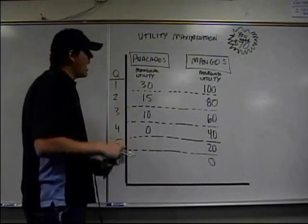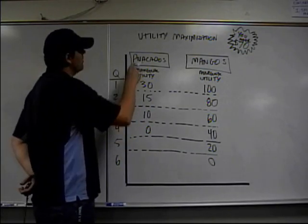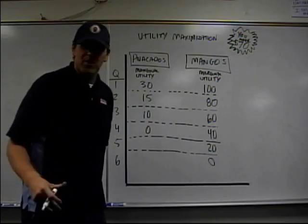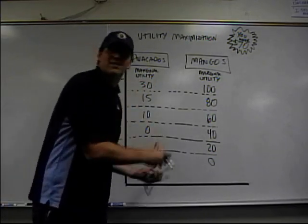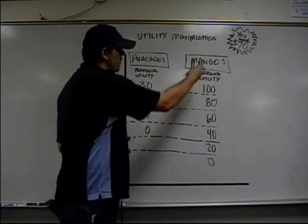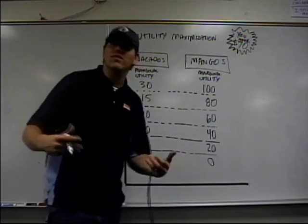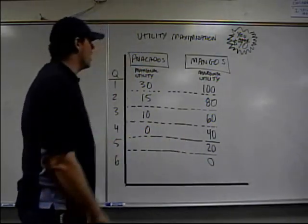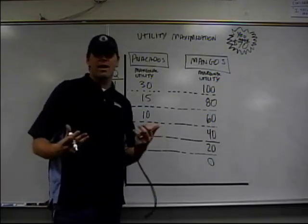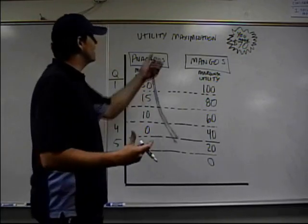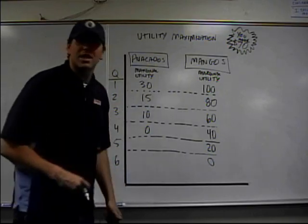Before we actually start the timer, take a look so you understand what we're looking at. This is the different quantity of avocados and mangoes, and it's going to be different for every person, so don't worry about the fact that you don't like mangoes. In this example, here is the additional benefit for one person. They have an income constraint — a total of $70 — and the question your teacher is going to ask is how should they maximize their benefit given $70? What combination of mangoes and avocados should they buy?